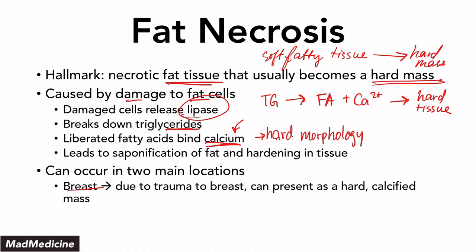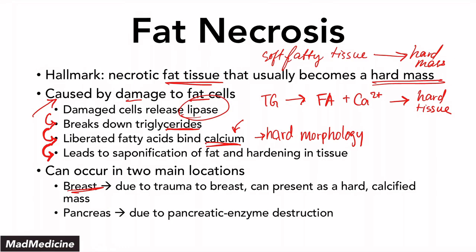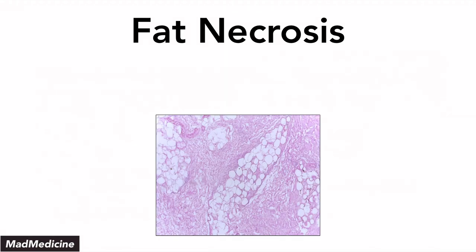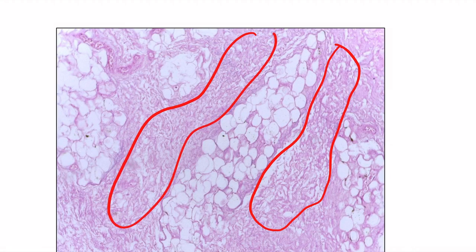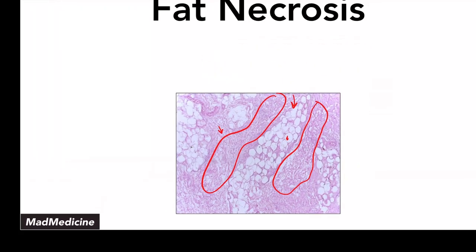Fat necrosis usually occurs in two main locations. Number one is the breast — in females, this happens due to breast trauma, which damages the breast cells, releasing lipases that break down triglycerides that bind to calcium, resulting in a hard mass. The other location is the pancreas, where fat necrosis occurs because of pancreatic enzyme destruction. On the histologic slide, you can see fatty tissues being broken down with dense hard material present that should normally look like fatty tissue filled with triglycerides and fatty acids.